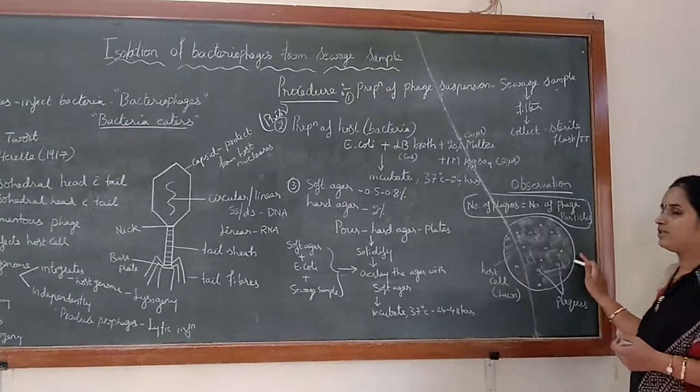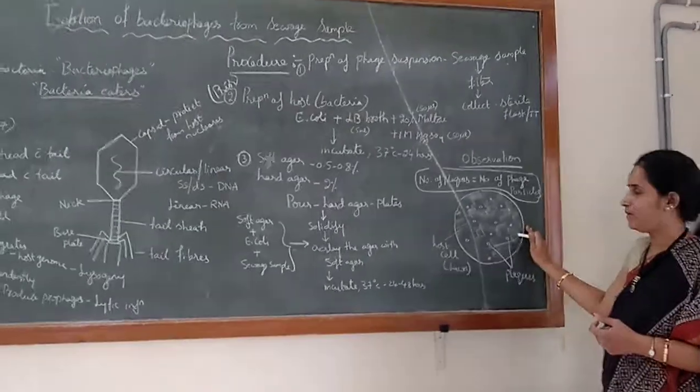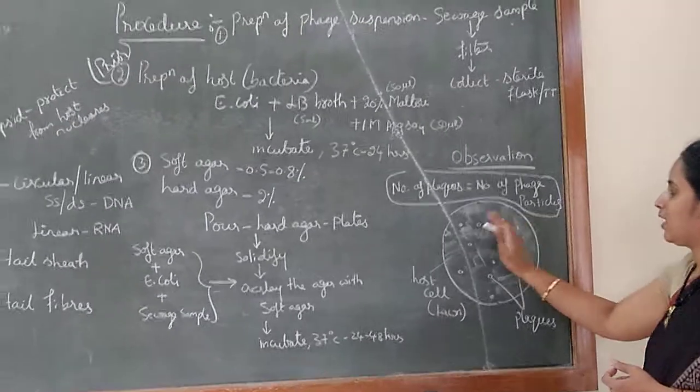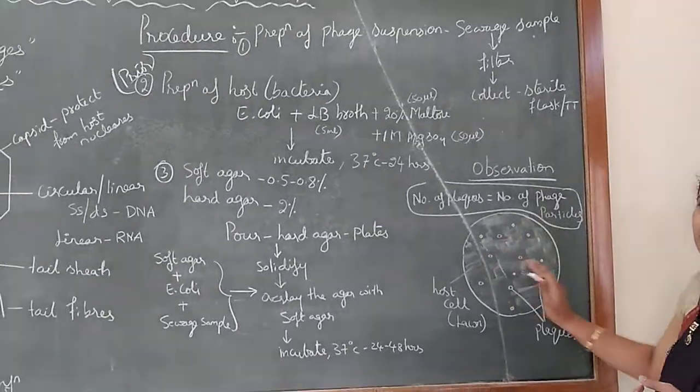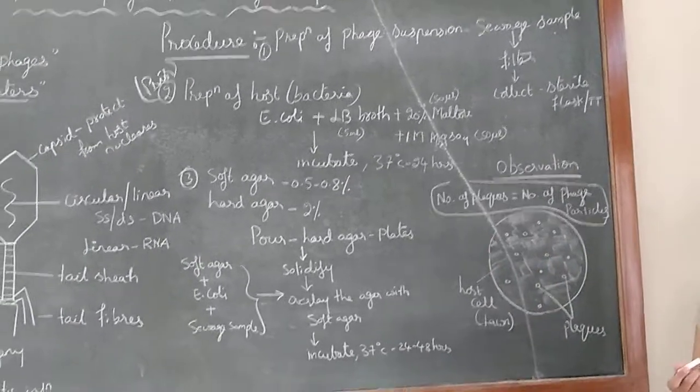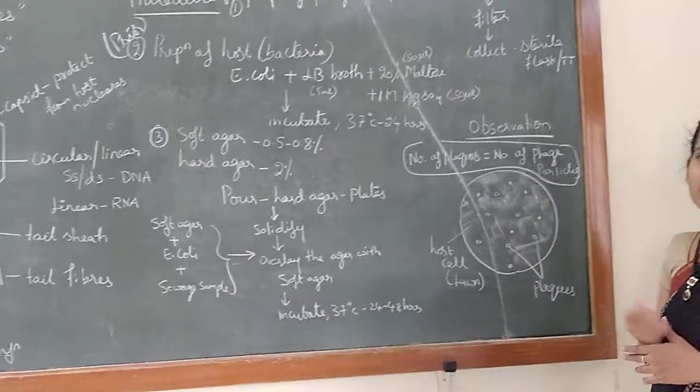So after that, how do you observe the plaques? What is the observation you can make from this experiment? So here, when you look at the plate, you can see the whole plate will be covered with the host cell, that is the bacterial cell, which is the E. coli we took.